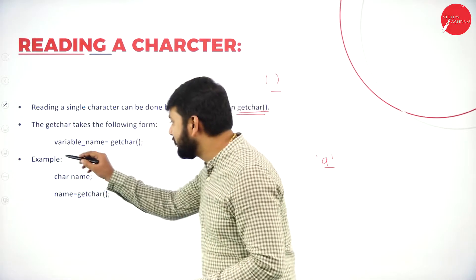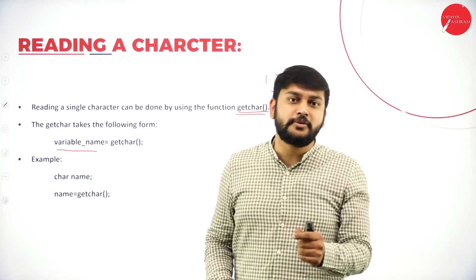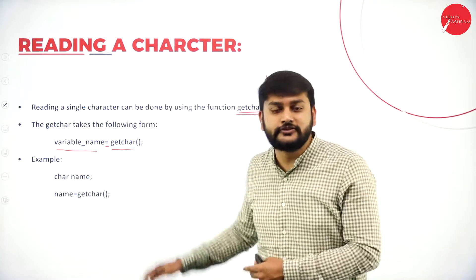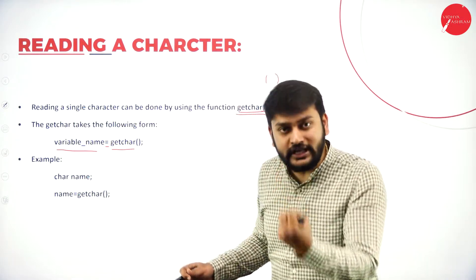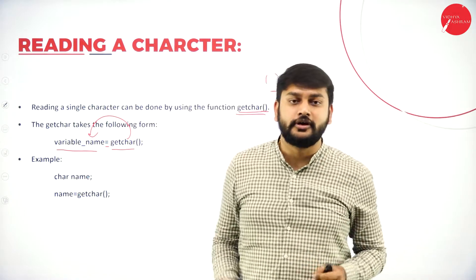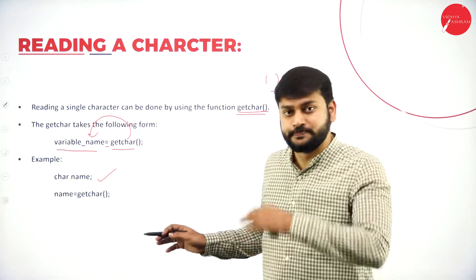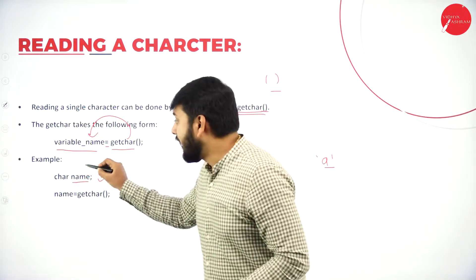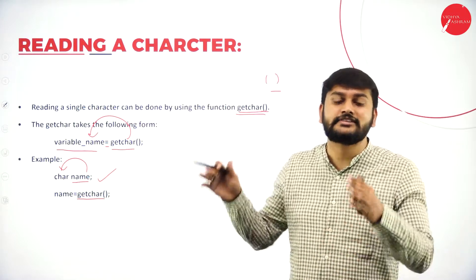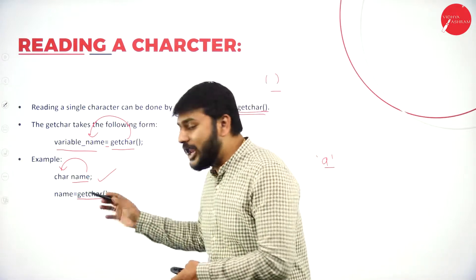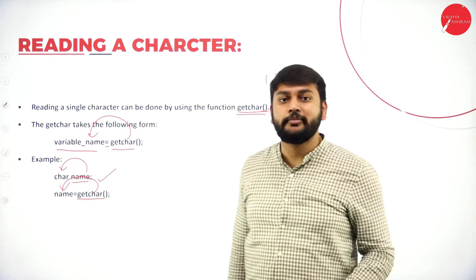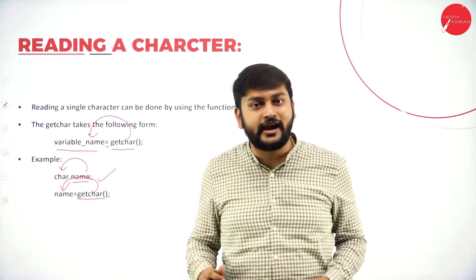Please listen to me carefully. Here is the syntax: I have to write the variable name, then use the assignment operator, followed by the function getchar(). This function will help me read a single character and then assign that character to whatever variable you have. In this slide, I am creating a variable called 'name' of type char, and then I use getchar(). GetChar reads one single character and assigns it to the variable 'name'. This is how I will be reading one single character.